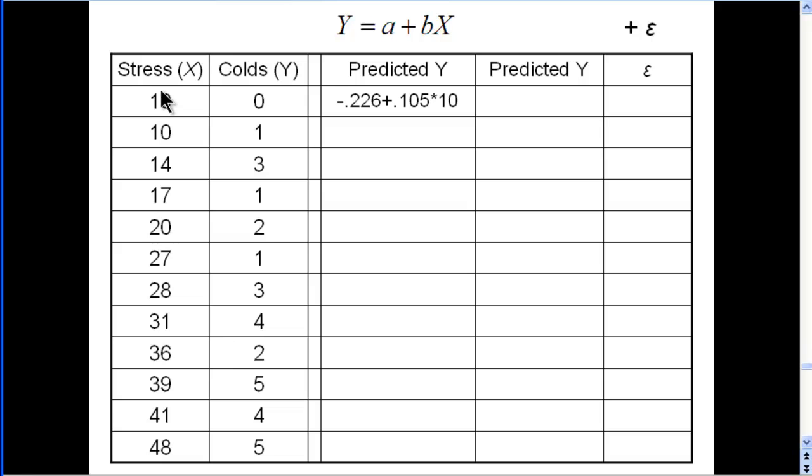So for the first person who had a stress level of 10, we can use the regression equation to predict how many colds they would have. So we've got the intercept, and I've got the formula up here. Negative 0.226 is the intercept.